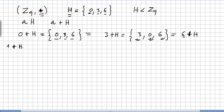Now we do 1 plus H: 1+0=1, 1+3=4, 1+6=7, so 1+H = {1, 4, 7}. It's easy to check that 4+H gives the same: 4+0=4, 4+3=7, 4+6=10 mod 9=1. And 7+H: 7+0=7, 7+3=10 mod 9=1, 7+6=13 mod 9=4. So these three are all the same coset.